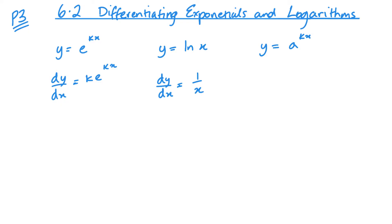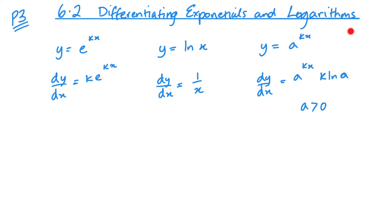So now we'll be able to integrate things with just a single x on the bottom. Finally, when y equals a value raised to the power kx — where a could be 2, 3, 4, 5 and so on — the derivative is a^kx multiplied by k·ln(a), where a must be greater than 0. I'm not going to go into where these results come from; just learn them for your exams.